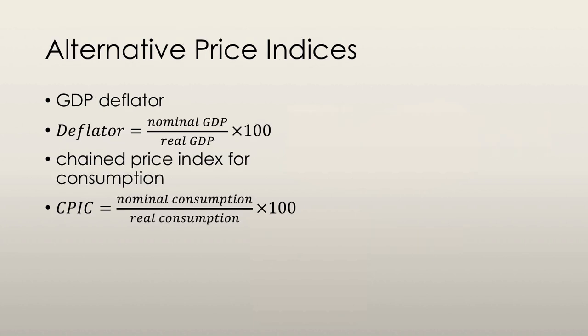There are a couple of alternative price indices as well. One is the GDP deflator, which is equal to nominal GDP over real GDP multiplied by 100. The real GDP value is calculated using the chained dollar method, meaning the weights attached to each item in the deflator are components of GDP in the current and preceding years. This incorporates the substitution bias and the new goods bias, but the problem is that it's too broad a measure of the actual cost of living and includes many items that consumers don't actually buy.